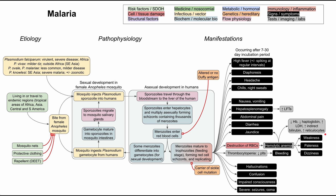In more severe cases of malaria, central nervous system findings can occur, such as hallucinations, confusion, and impaired consciousness. In very severe cases, seizures and coma may develop as well.